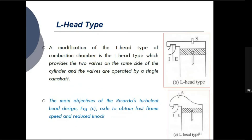The L-head combustion chamber is a modification of the T-head type. It provides two valves on the same side — either left or right — eliminating the need for two camshafts. Unlike the T-head, the L-head type requires only a single camshaft to operate both valves, since both valves are located on the same side of the cylinder.